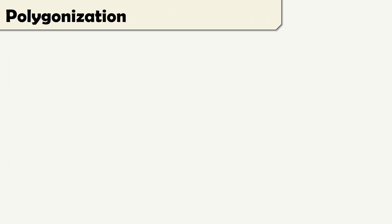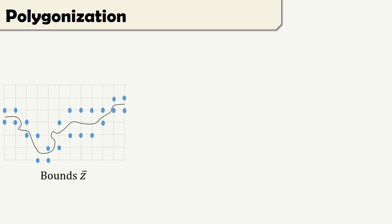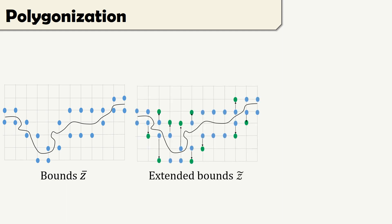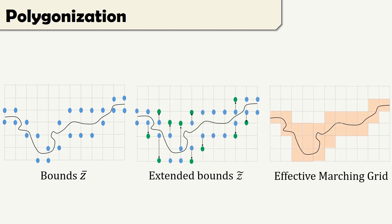Because our terrain contains sparse volumetric landforms, we propose an optimization of the marching cubes algorithm. We efficiently prune the grid and only query the field function around the terrain surface.